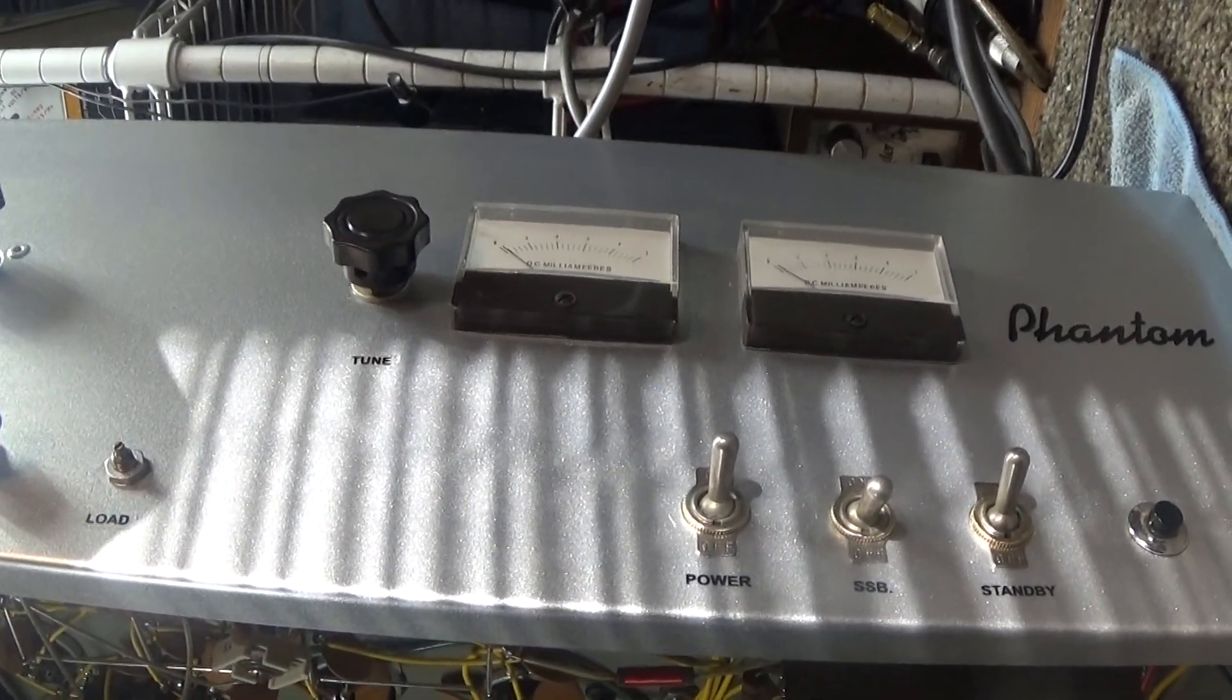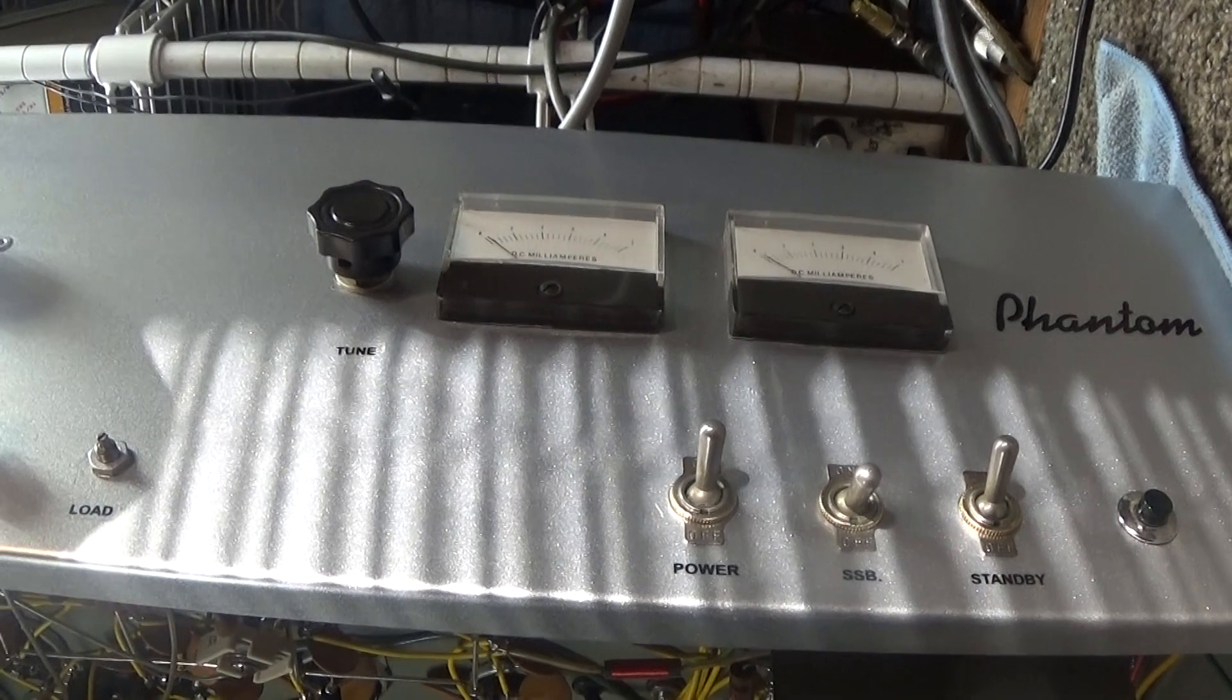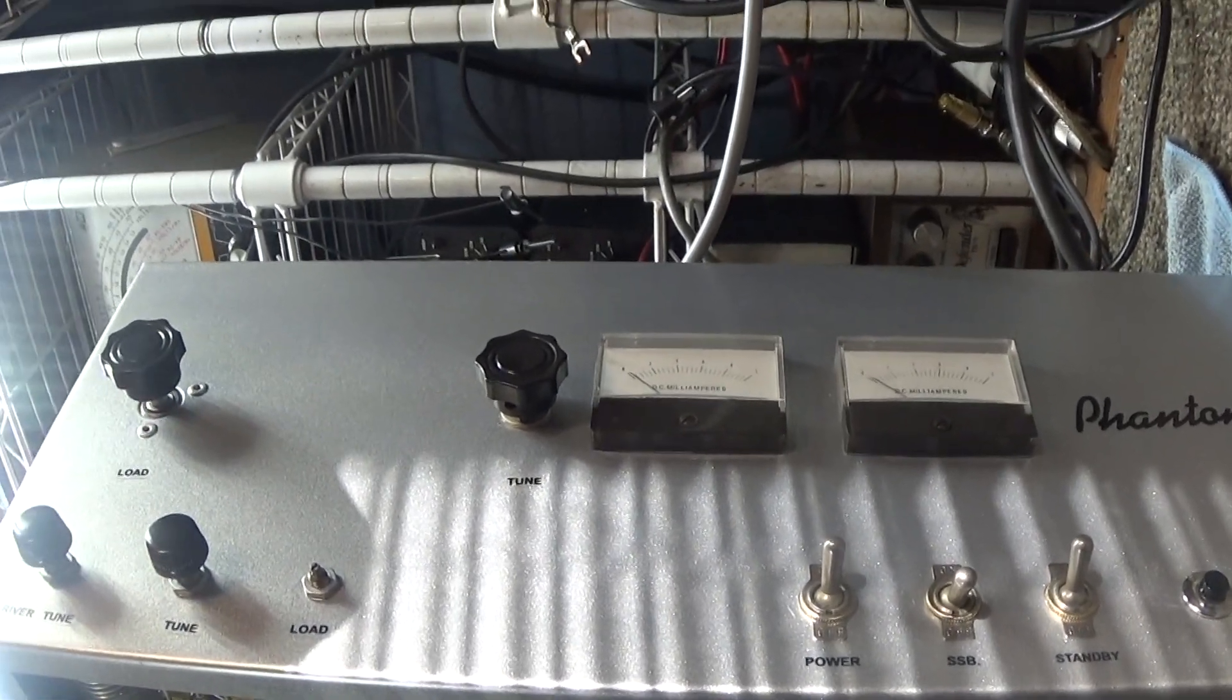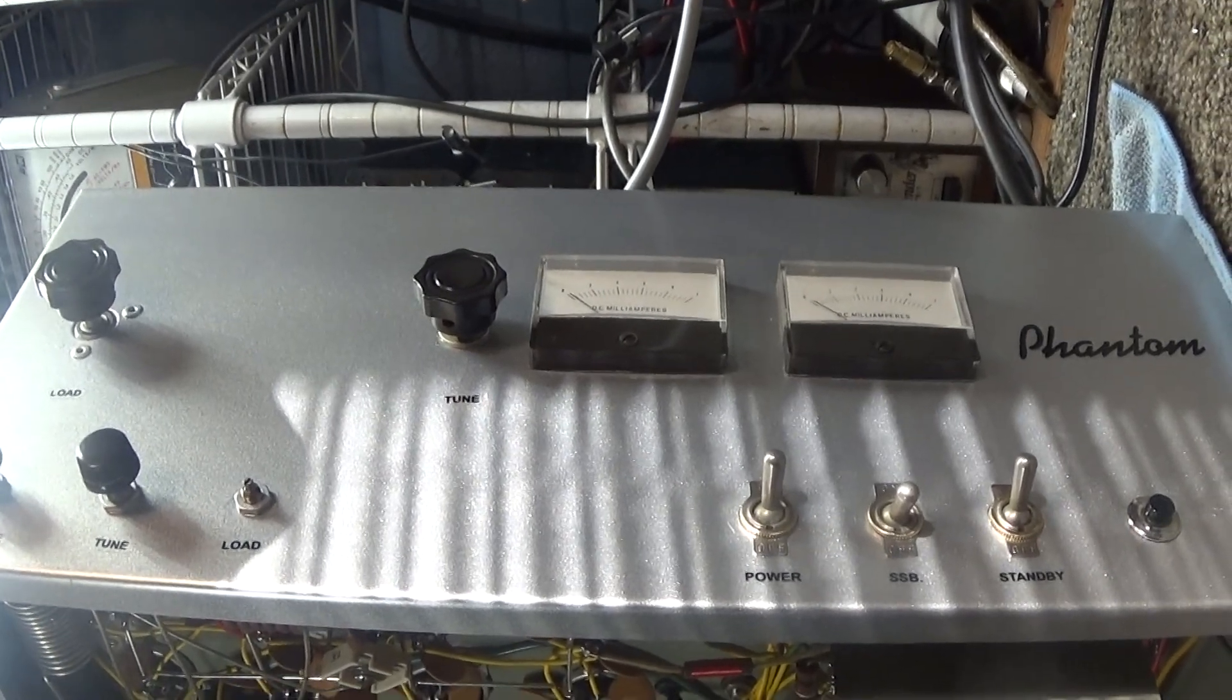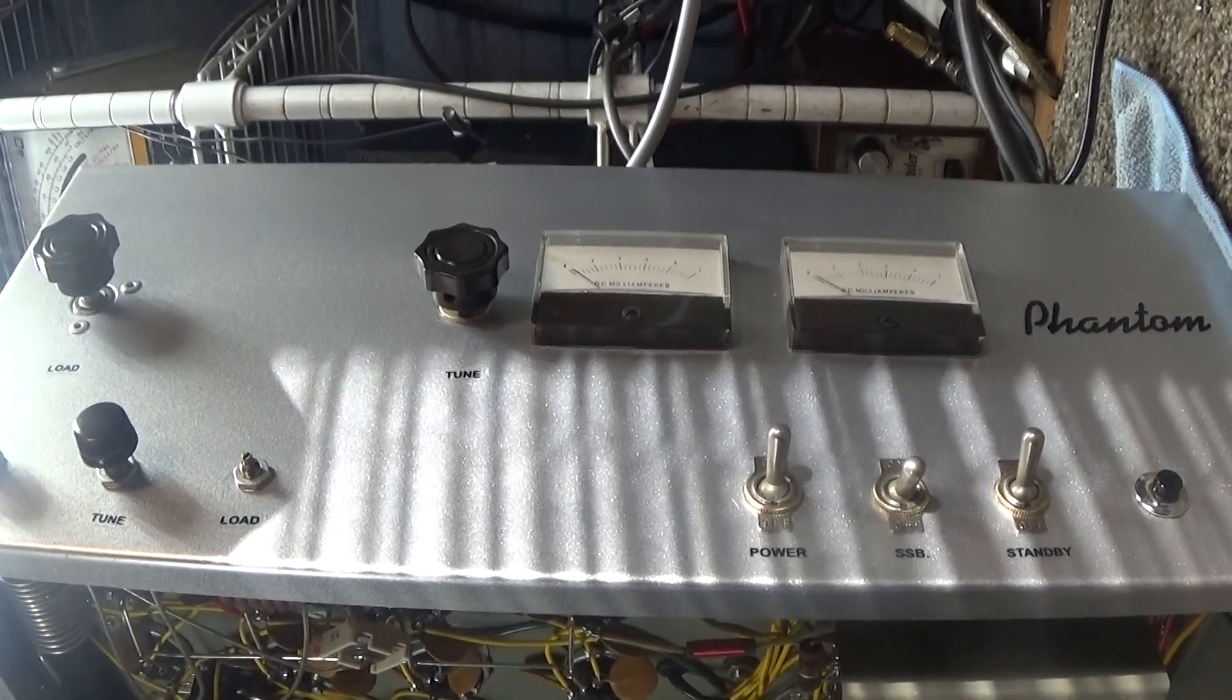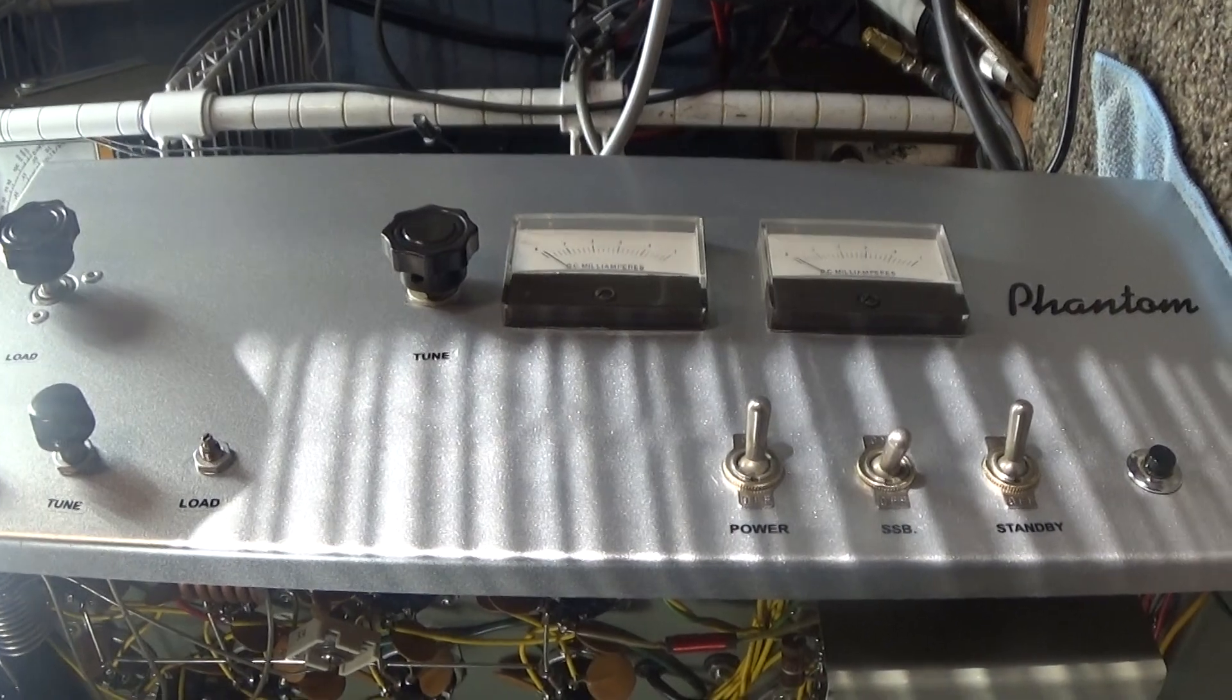Today I'm going to do a review of a Phantom 500. This is an older version 2-stage 10-tube with no preamp or bilateral. This is a mono band also, it only has 10 meters in it, no band switch.